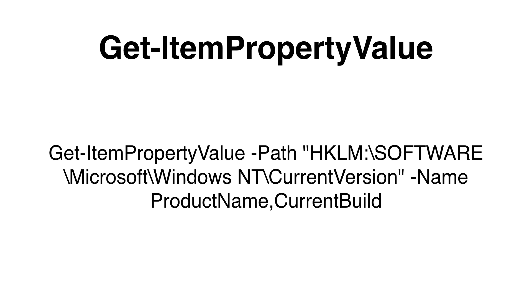We need to specify the full path in the path parameter and then we can specify the value names that we would like to have returned. If you are looking for more than one value, you can separate the value names with a comma.